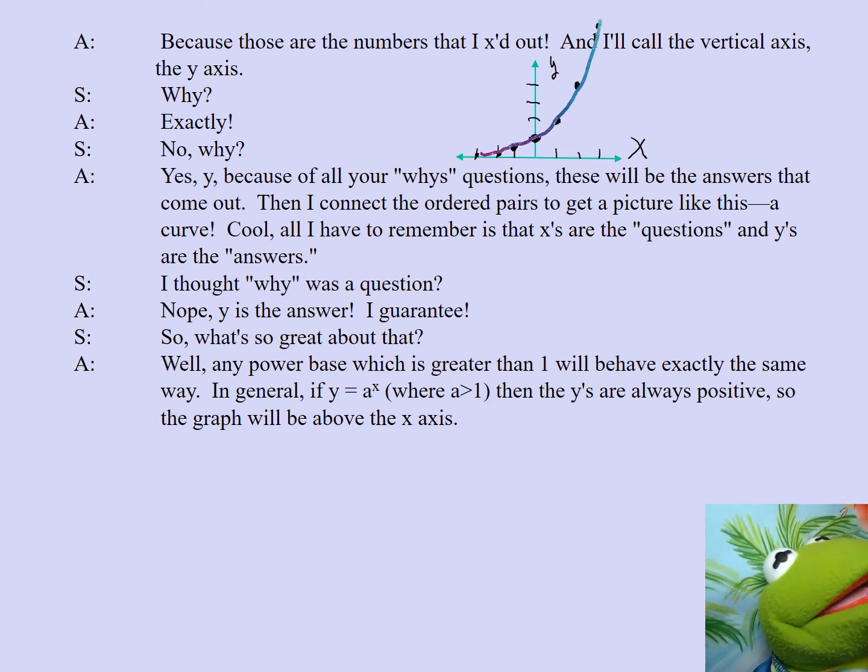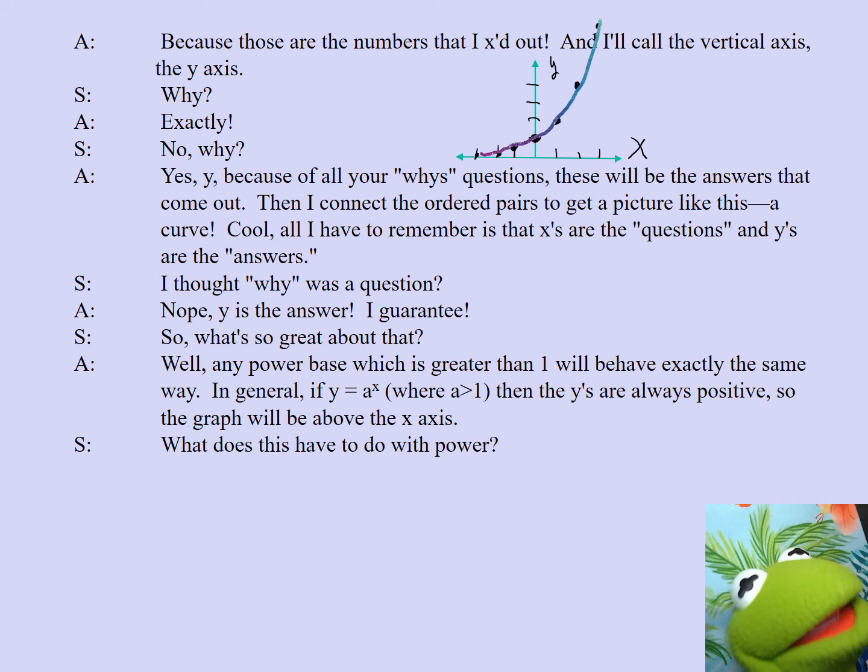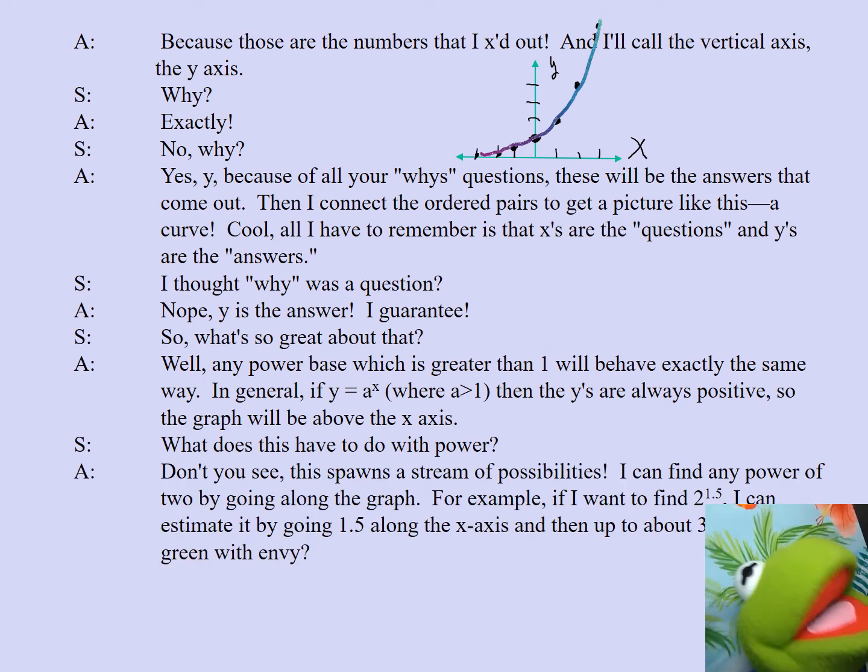So, what's so great about that? Well, any power base which is greater than one will have exactly the same shape. In general, if y equals a to the x, where a is greater than one, then the y's are always positive, so the graph will always be above the x-axis. What does this have to do with power? Don't you see? This spawns a stream of possibilities. I can find any power of 2 by going along the graph. For example, if I want to find 2 to the 1.5, I can estimate it by going 1.5 along the x-axis, and then up to about 3. Aren't you green with envy?